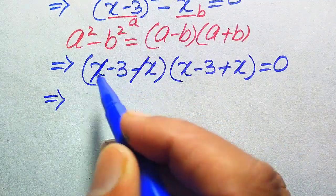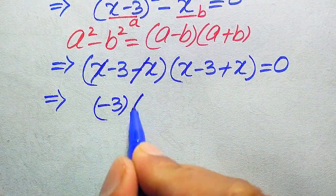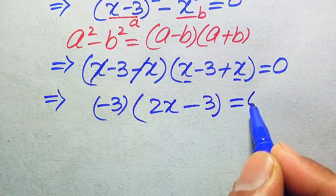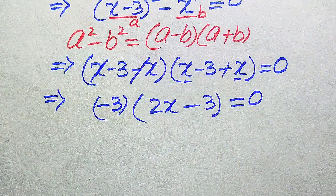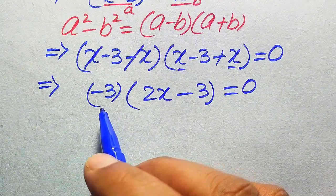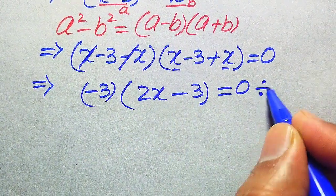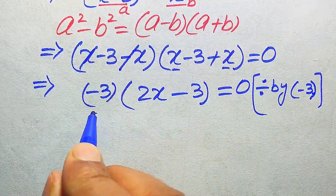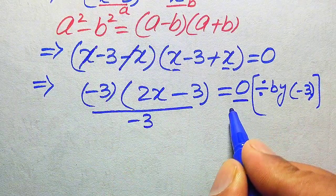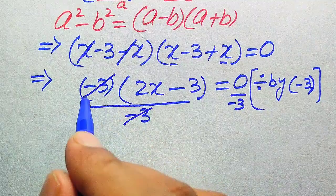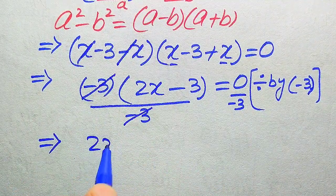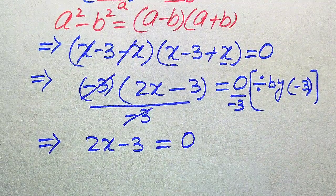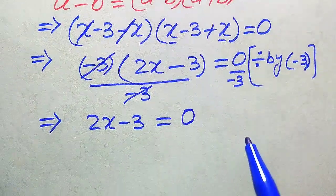After simplification, the negative x and positive x cancel out, giving us minus 3. And x plus x becomes 2x, so we have minus 3 times (2x minus 3) equals zero. We divide both sides by minus 3, and since zero divided by minus 3 is zero, we get 2x minus 3 equals zero.